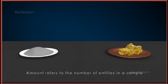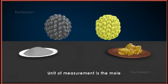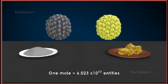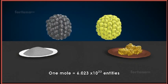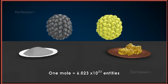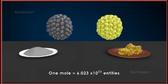In chemistry, the term amount refers to the number of entities in a sample, and the unit of measurement is the mole. One mole is the amount of a substance that contains 6.023 times 10 to the power of 23 entities of that substance.